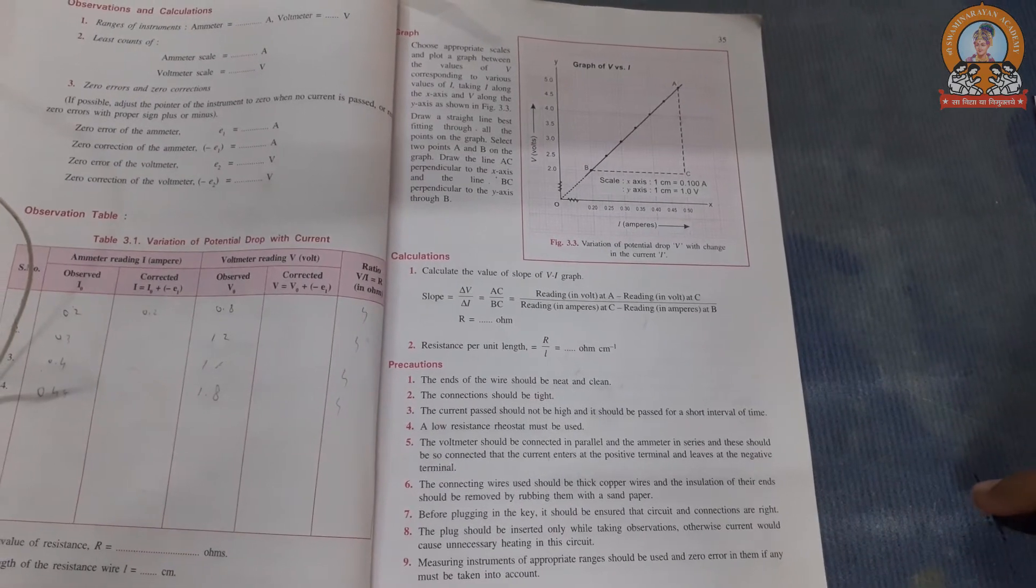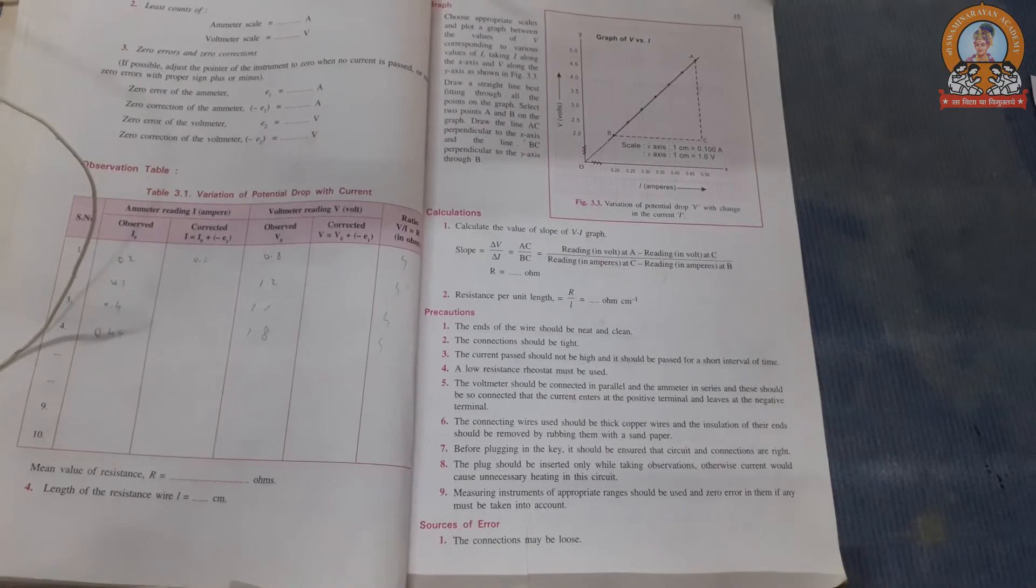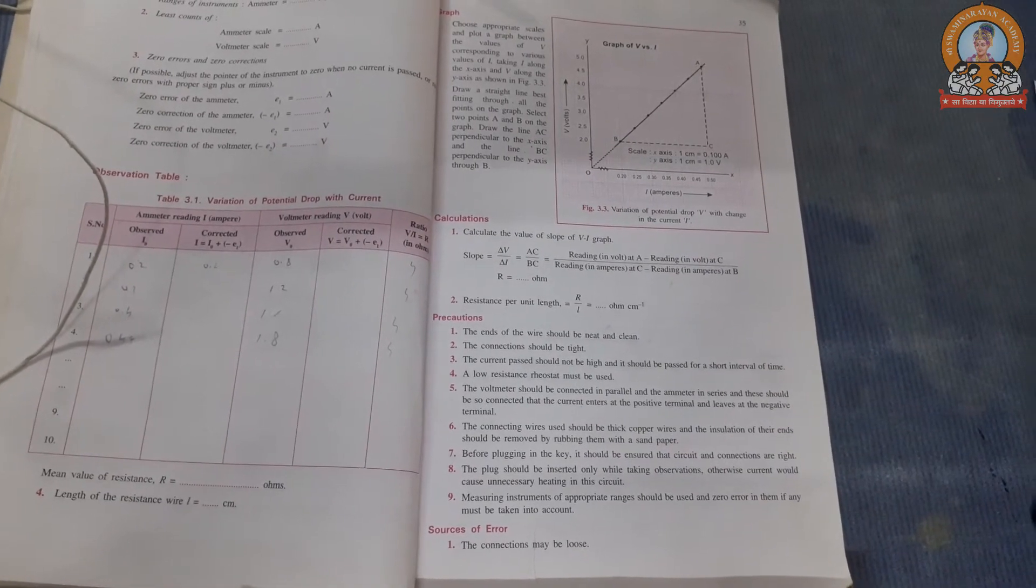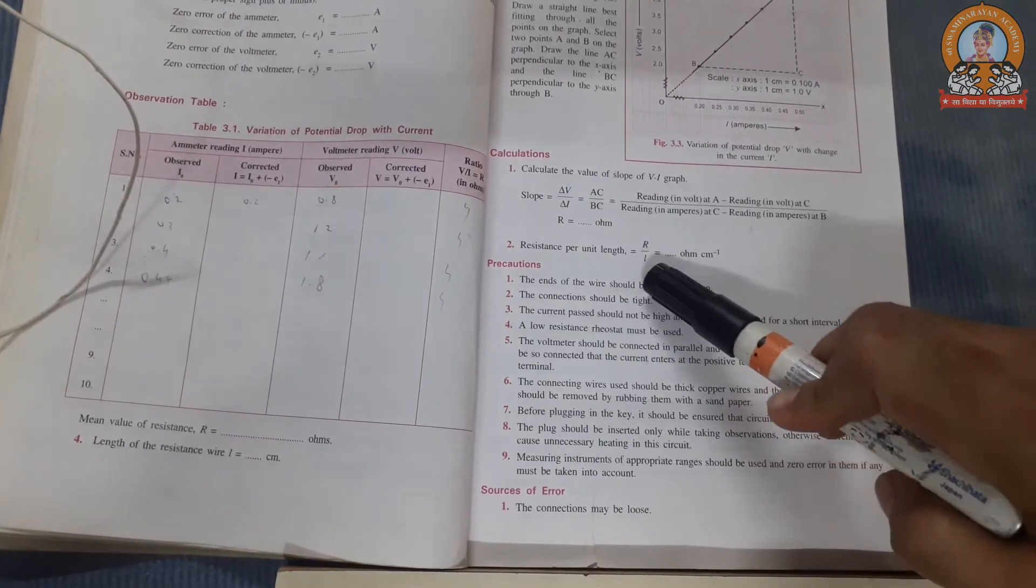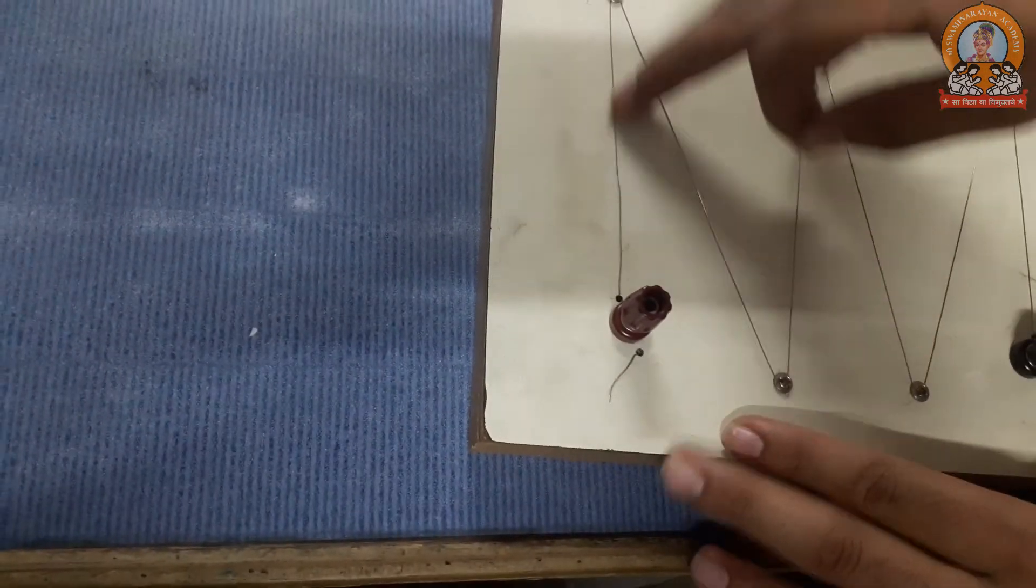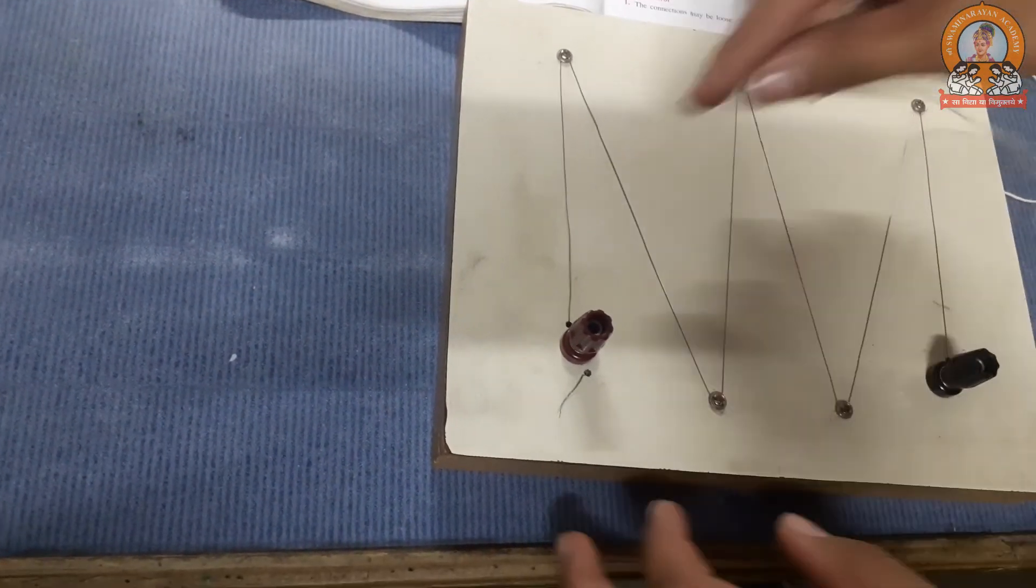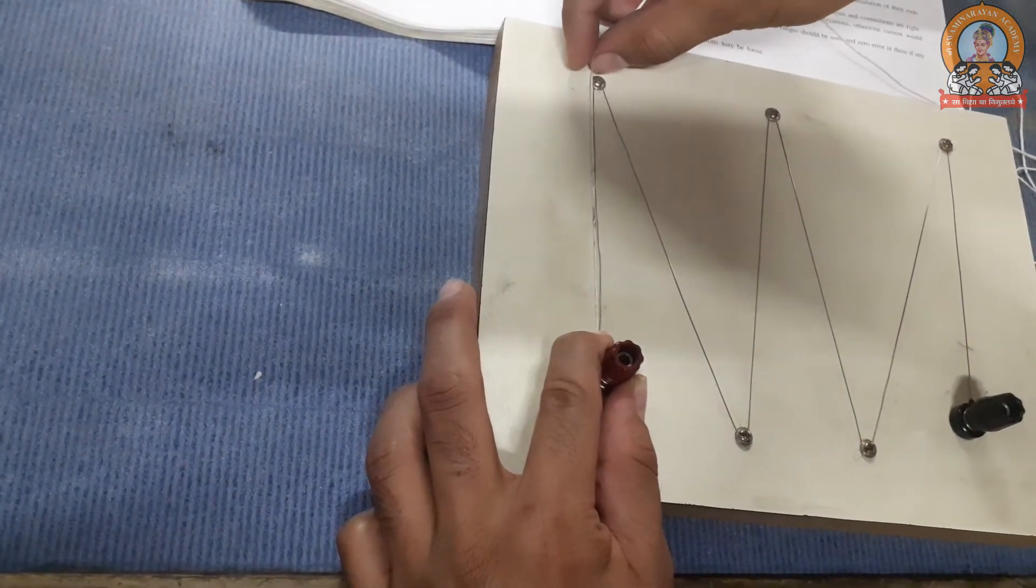This was not our main aim to draw the graph. Our main aim was to find the resistance per centimeter of a given wire. Our resistance came out by the experiment, that was 12.5 ohm. Now we need to find the length also, R by L. Now how we find the length? We need to take a free thread. Now this is our wire. You need to stick your finger to a point, just go like that.